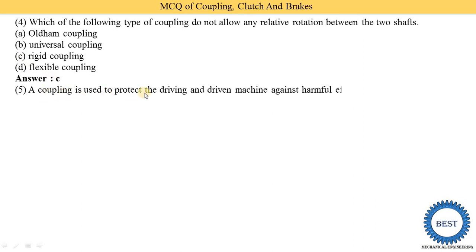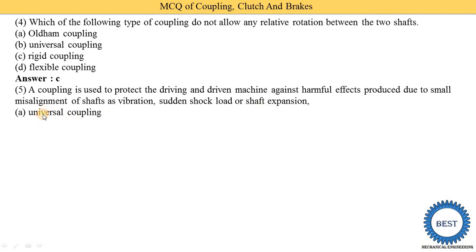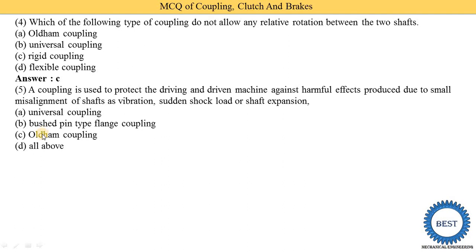A coupling is used to protect the driving and driven machines against harmful effects produced due to small misalignment of shafts, such as vibration, sudden shock loads, or shaft expansion. Options: universal coupling, bush pin type flange coupling, Oldham coupling, and all of the above. The correct answer is option D — all of the above.